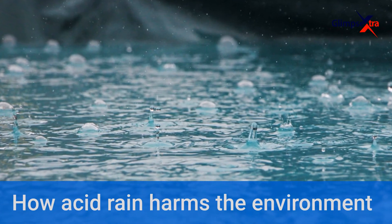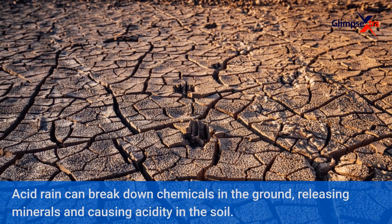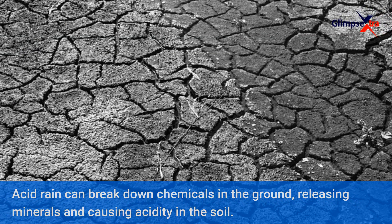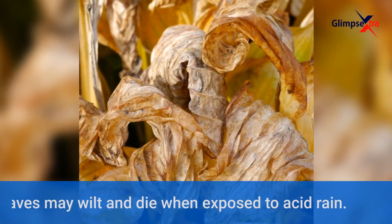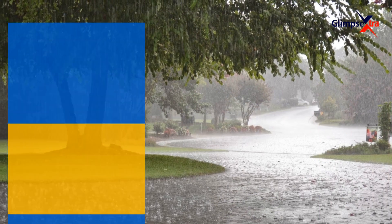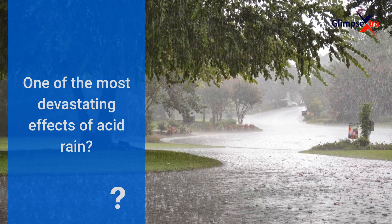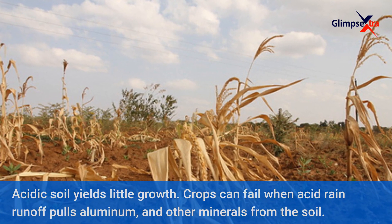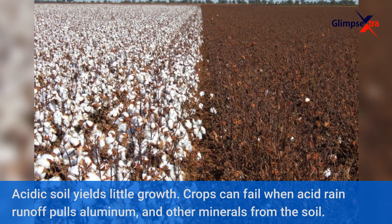How does acid rain harm the environment? Acid rain can break down chemicals in the ground, releasing minerals and causing acidity in the soil. Leaves may wilt and die when exposed to acid rain. One of the most devastating effects: acidic soil yields little growth. Crops can fail when acid rain runoff pulls aluminum and other minerals from the soil.